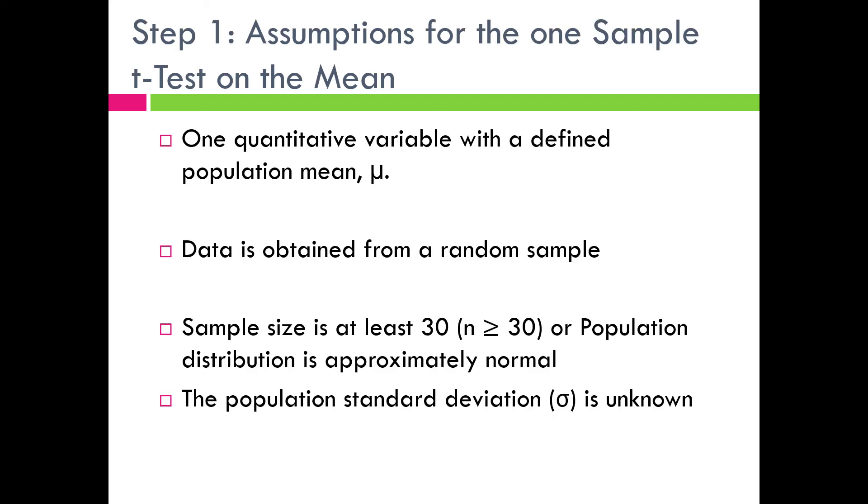Let's take a look at each of these steps individually. First off, with the assumptions, these are the assumptions or conditions that are specific to the one sample t-test on the mean. The assumptions are a series of questions that we ask ourselves in order to select the most appropriate test for the information that's given. We have to satisfy these conditions or assumptions in order to do the one sample t-test. First off, the one sample t-test is dealing with one quantitative variable, and we have to have a defined population mean that we're trying to test or learn something about.